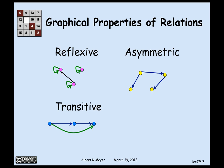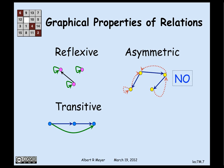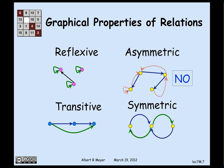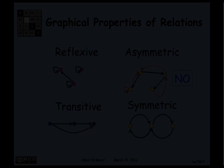Asymmetric means that whenever you have an edge from one vertex to another, there is no edge back. So if there's an edge from one vertex to another, there is no return edge, nor is there ever a self-loop in an asymmetric graph. In a symmetric graph, wherever there's an edge, there's also an edge going back the other way.